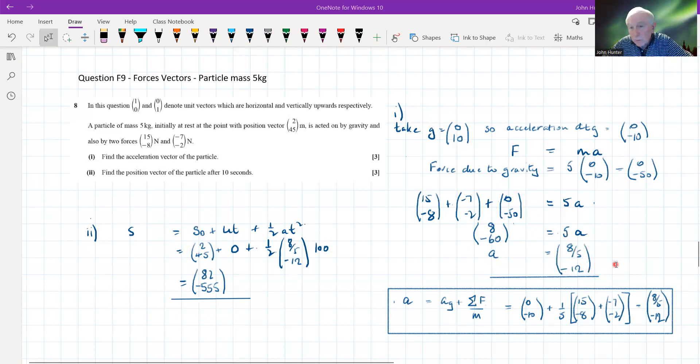So minus 12 would be downwards in actual fact, because our frame of reference is upwards. So that is the answer to part one.